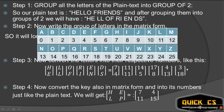Step four: convert the key into matrix form and then convert those letters into number form, just like we did for the plain text. We write the key from left to right, one row at a time: H, E, L, P. H is 7, E is 4, L is 11, P is 15. So the key matrix is [7, 4 / 11, 15].